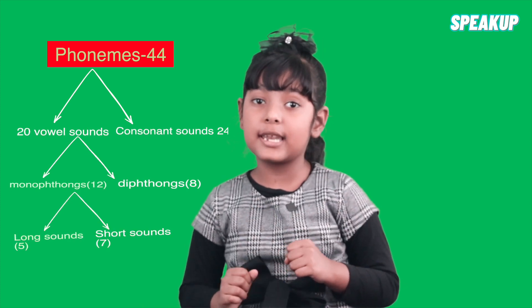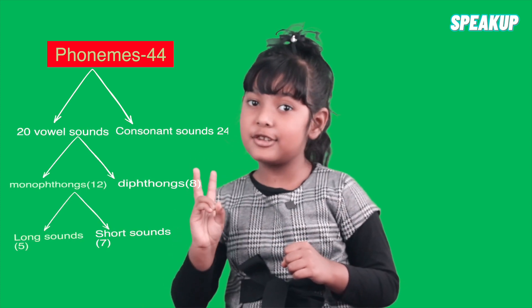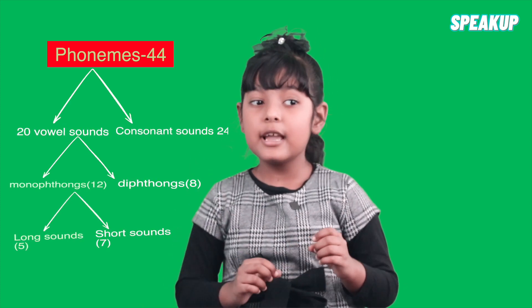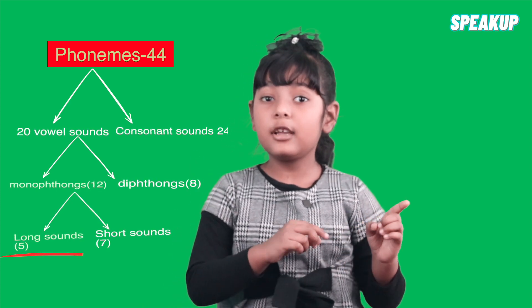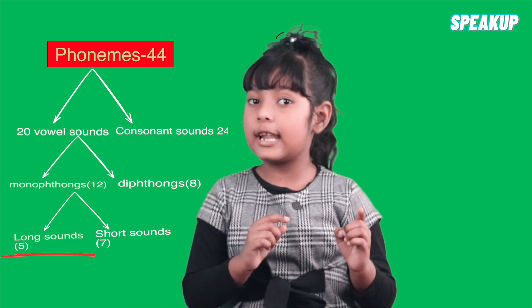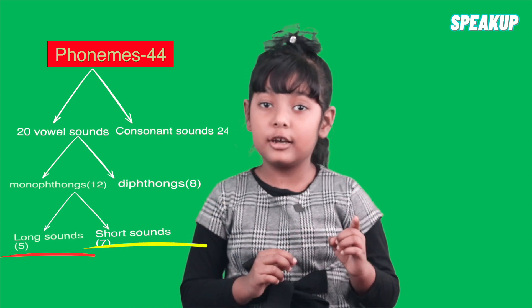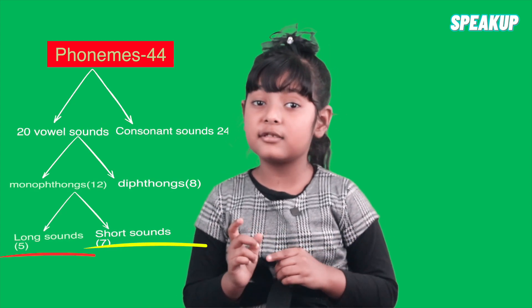These 12 monophthongs are divided into two pairs. One is long sounds and the other is short sounds. Long sounds are 5 and short sounds are 7.